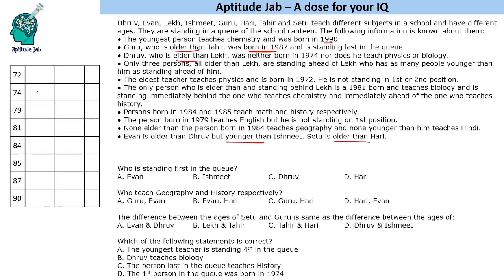I've jotted down the years mentioned in the statements in ascending order. The youngest person teaches chemistry and was born in 1990. Guru was born in 1987 and is older than Tahir, so Tahir must be the youngest person. Guru is also standing last in the queue, so we can fill that in.